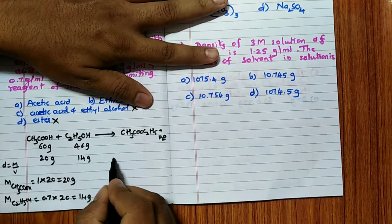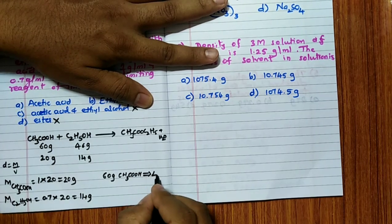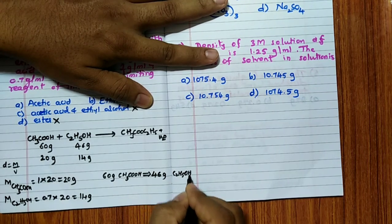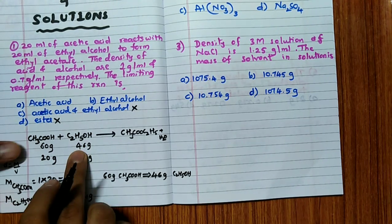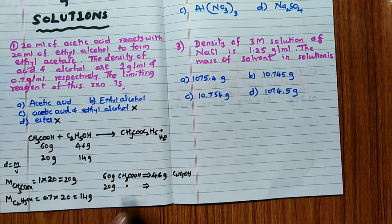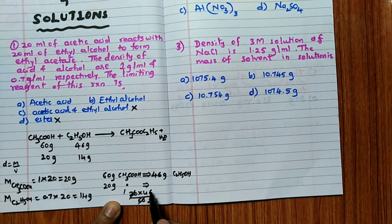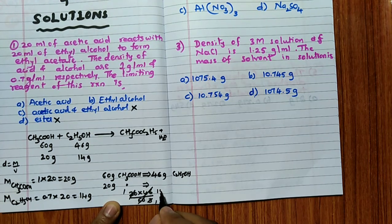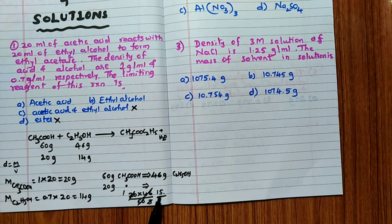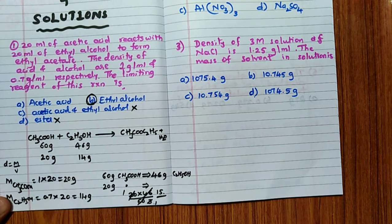Standard stoichiometry: 60g acetic acid needs 46g ethyl alcohol. So 20g acetic acid needs: (20 × 46) / 60 = 15.3g approximately. But we only have 14g of ethyl alcohol, which is less than required. Hence C₂H₅OH (ethyl alcohol) is the limiting reagent.